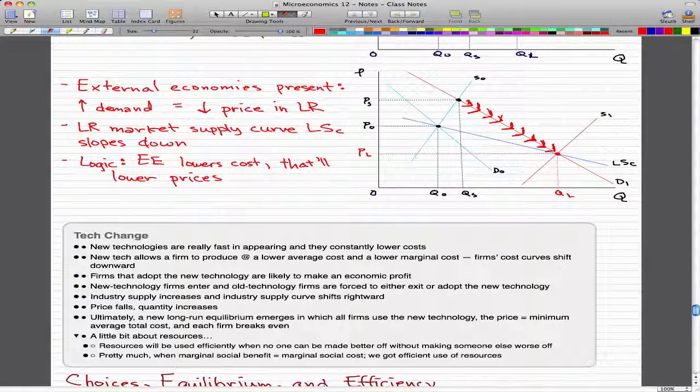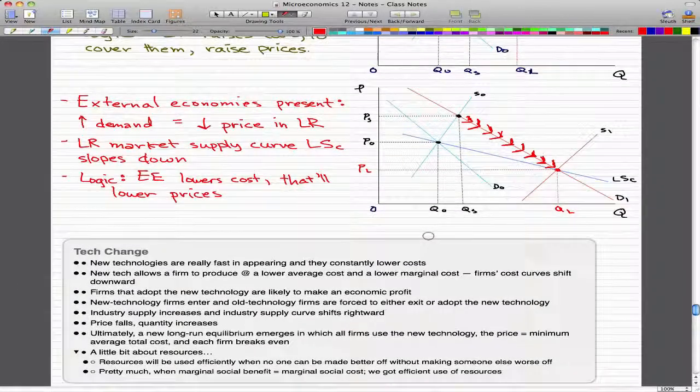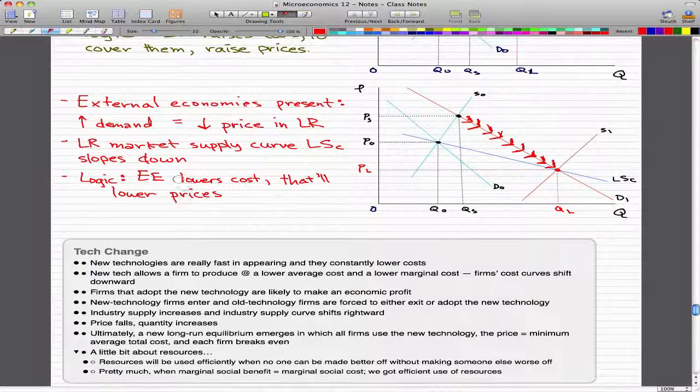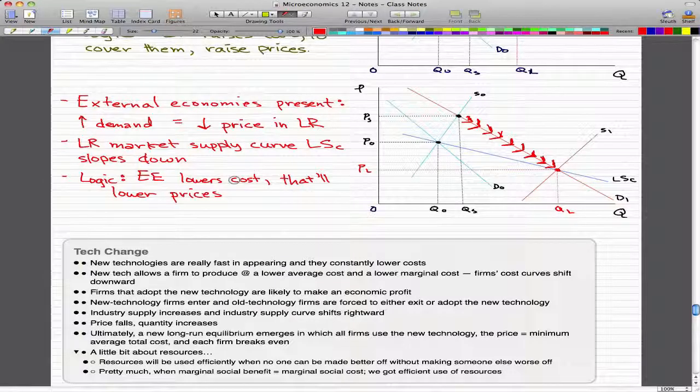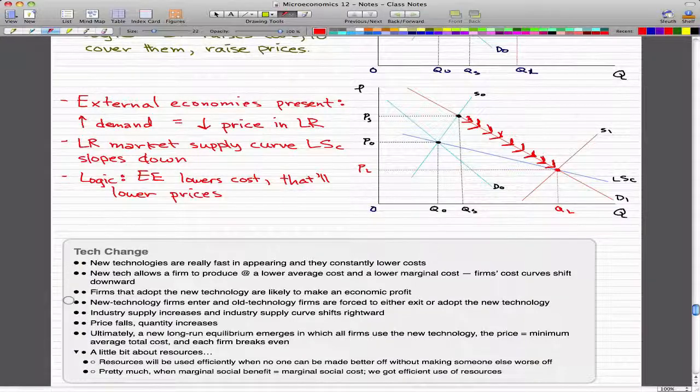I'm going to go through a little bit about technological change. New technologies are really fast in appearing, and they constantly lower costs and contribute to external economies, as I just mentioned. New technology enables a firm to produce at a lower average cost and a lower marginal cost. So, the firm's cost curves ultimately shift downward.